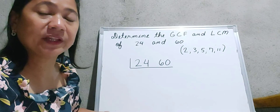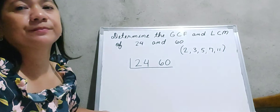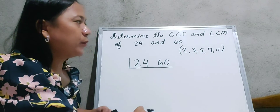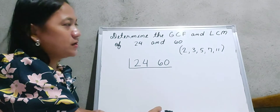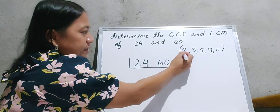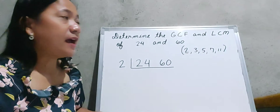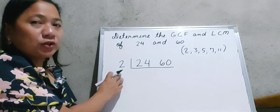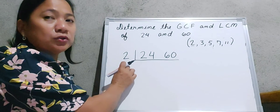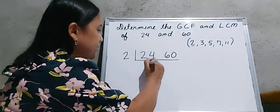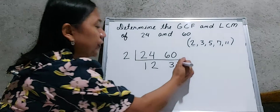Since we already have our dividend, let us find out what divisor we are going to use. Which prime number is divisible for both 24 and 60? The prime number that we are going to use is 2. So we divide 24 by 2, which gives us 12, and 60 divided by 2 is equal to 30.